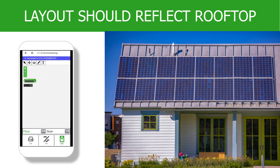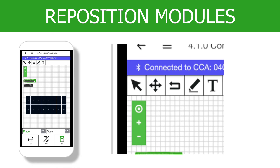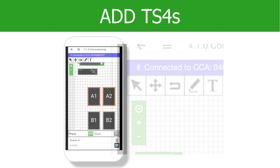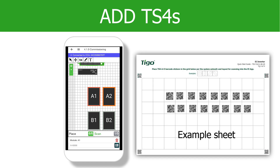It is highly recommended that the PV module placement mirror the actual location at the installation site — it will serve as a map for future maintenance and troubleshooting. Select the pointer on the top toolbar to move modules into their correct positions once they have been placed. Once all modules are placed, it is time to add the Tygo TS4s. There are two methods for TS4 entry. Regardless of which method, you will need the stickers that were placed on the site layout sheet or cardboard discussed in the installation lessons.